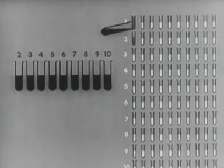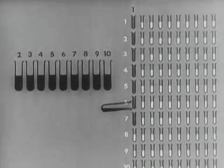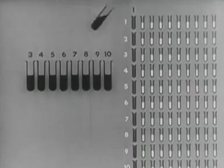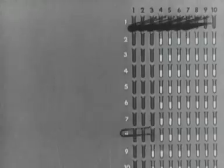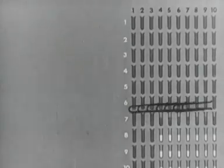Then into the first row down are put cells from the first man, into the second row down, cells from the second man, then the third row, and so on, until each lot of serum is mixed with each lot of cells, making a hundred serum cell mixtures.